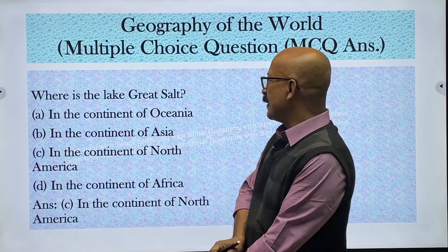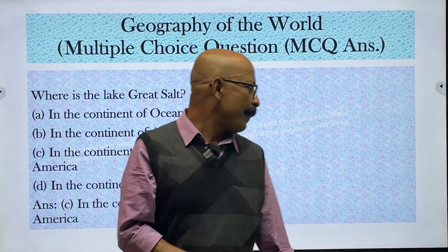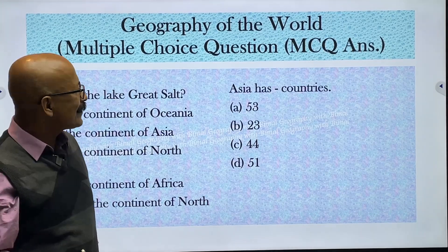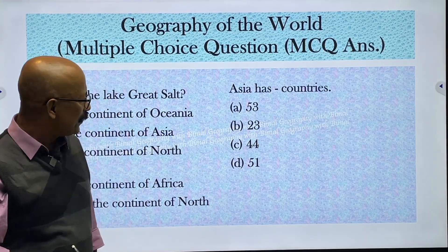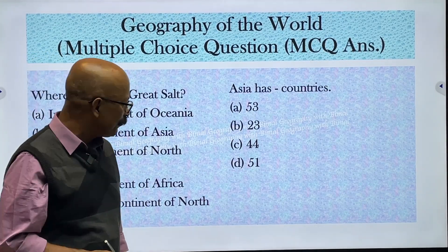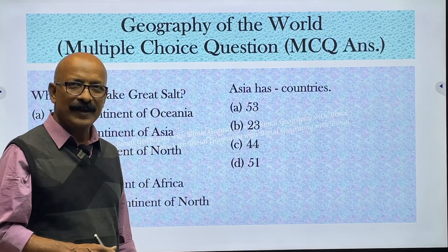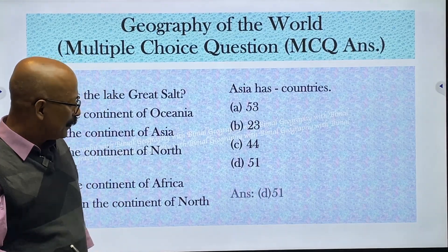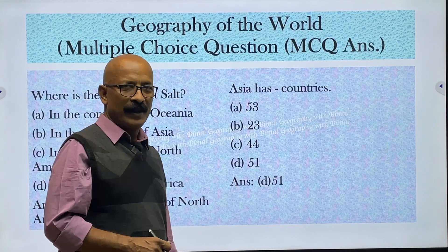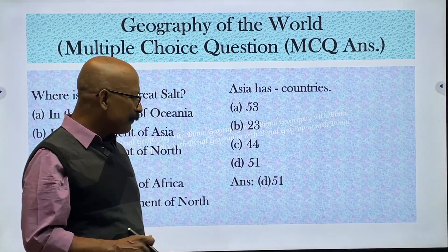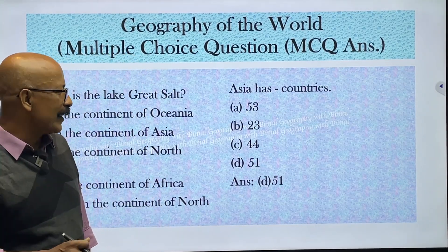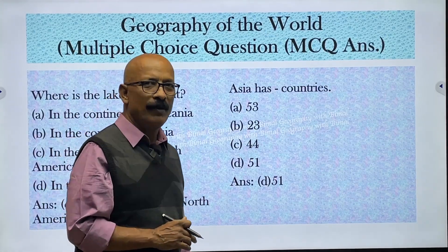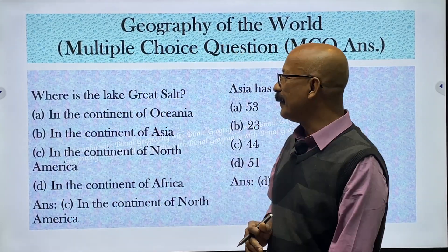Next question: Asia has how many countries? Options are 53, 23, 44, and 51. The answer is 51 — there are 51 countries in Asia. Africa has 53 countries, which is the most.